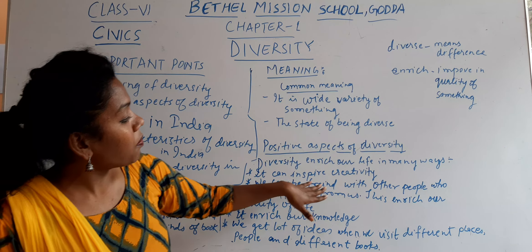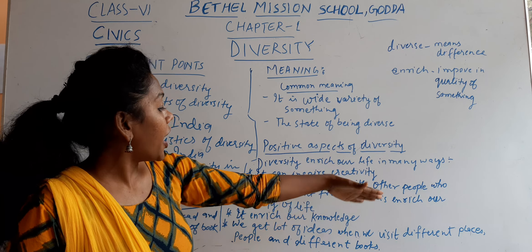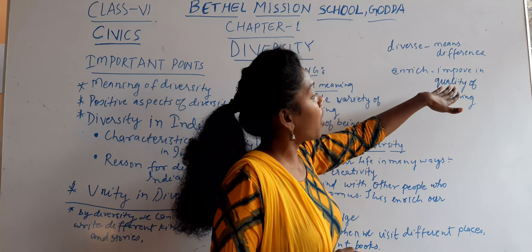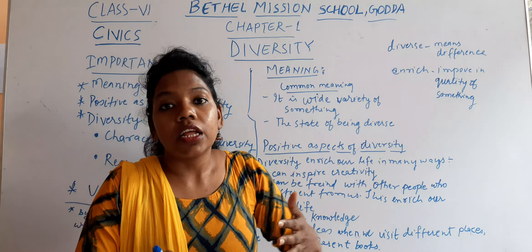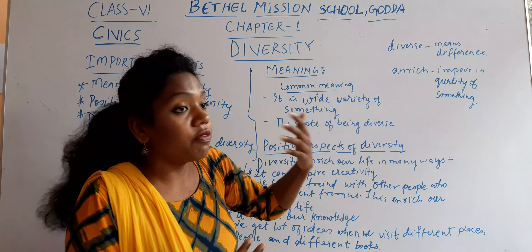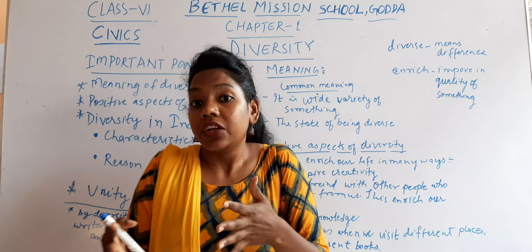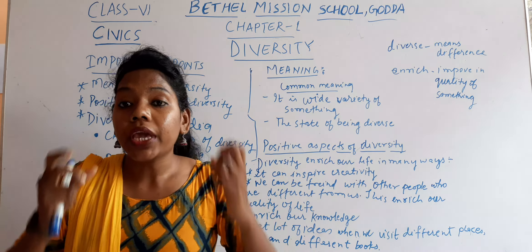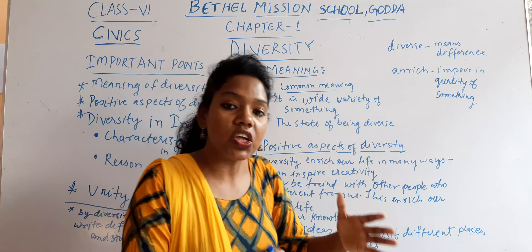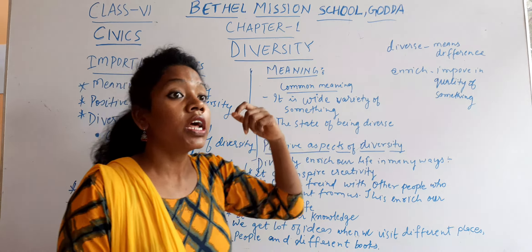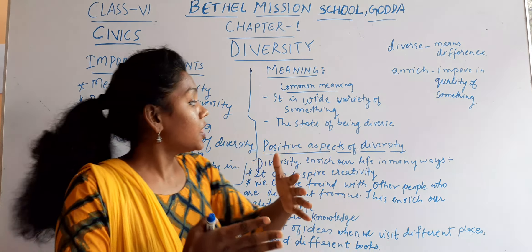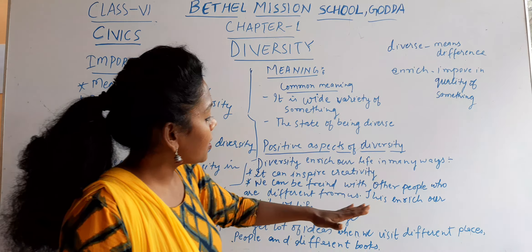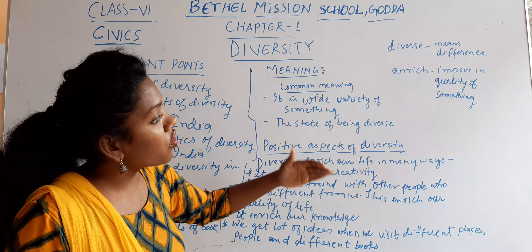The second point: we can be friends with other people who are different from us, and that enriches our quality of life. 'Enrich' means to improve the quality of something — it improves our way of living with people. For example, in India — which is called 'unity in diversity' — there are different people who live in different regions, follow different religions and cultures, have different languages, dresses, and food. Seeing all these different people improves our quality of life.